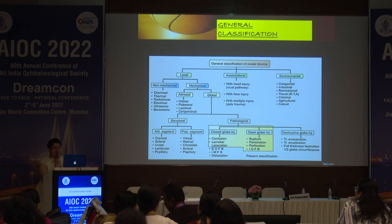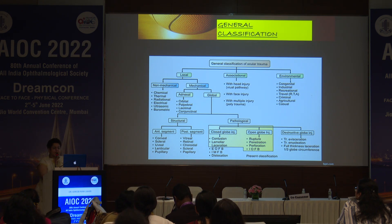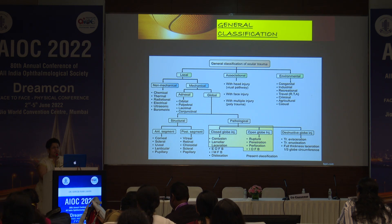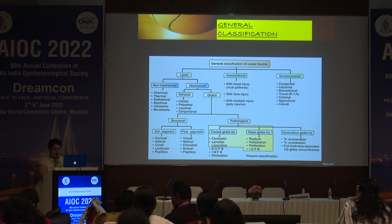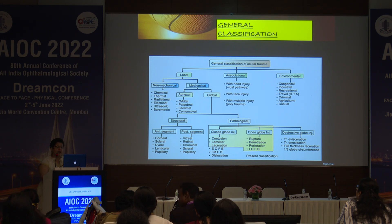In the pathological closed globe category, contusion, lamellar, and laceration are retained, but extraocular foreign body, intramural foreign body, and dislocations are also included. In open globe, the categories are rupture, penetration, perforation, and IOFB. Destructive globe injuries include traumatic evisceration, traumatic enucleation, or a full thickness laceration involving one third of the globe circumference. This comprehensive system covers all structures, causative agents, and methodologies of ocular trauma.